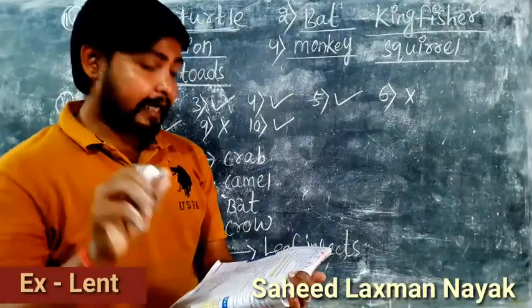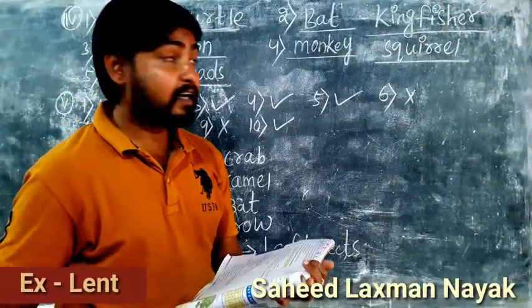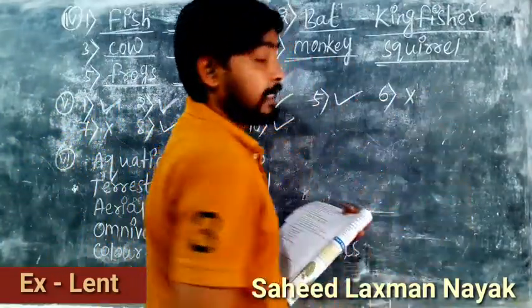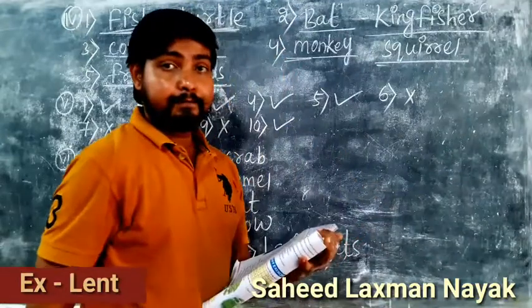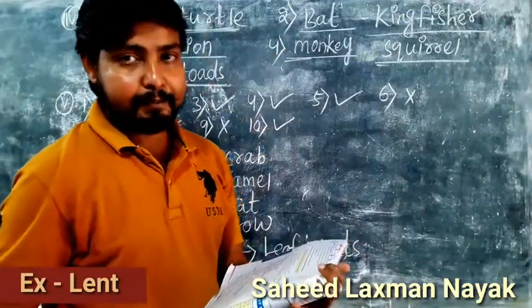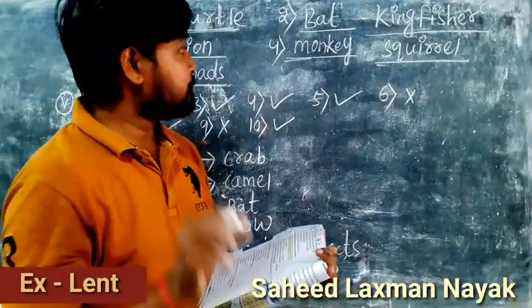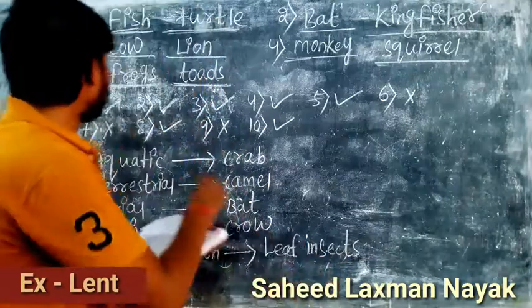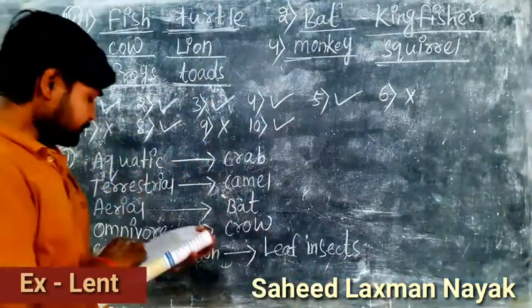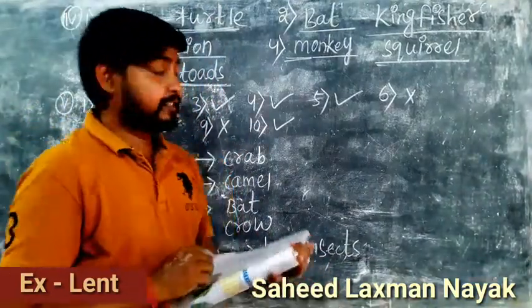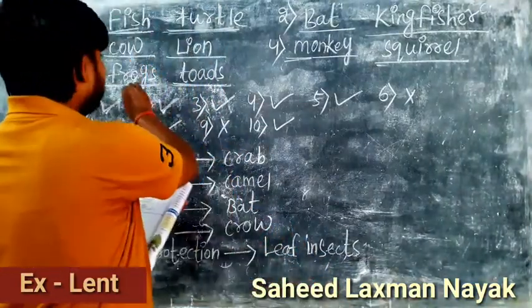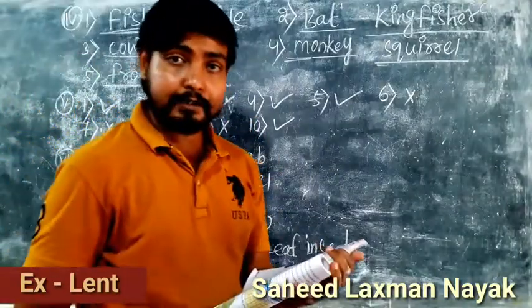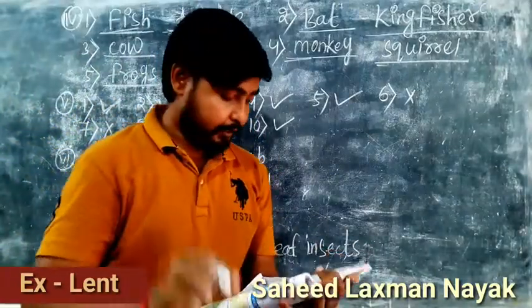Number four — arboreal animals: monkey and squirrel. Number five — amphibians: crocodile and toad.